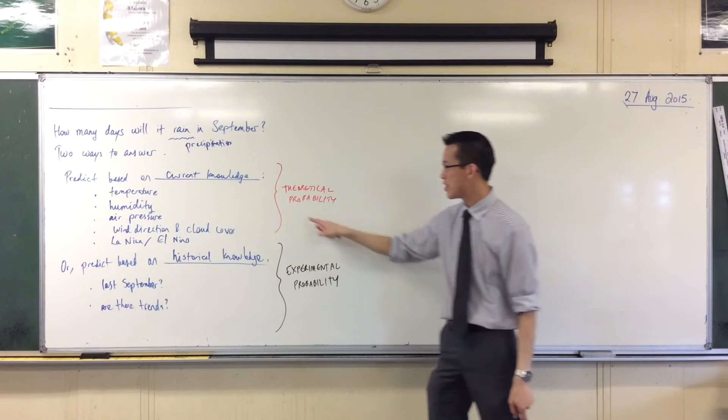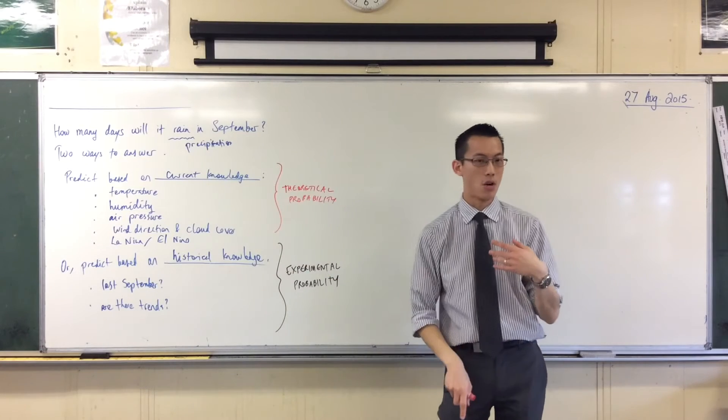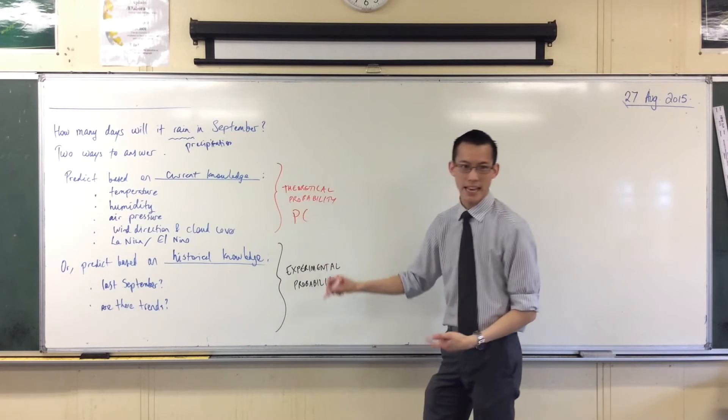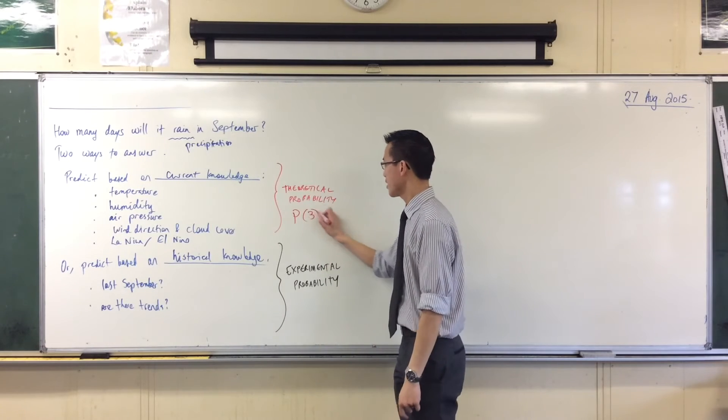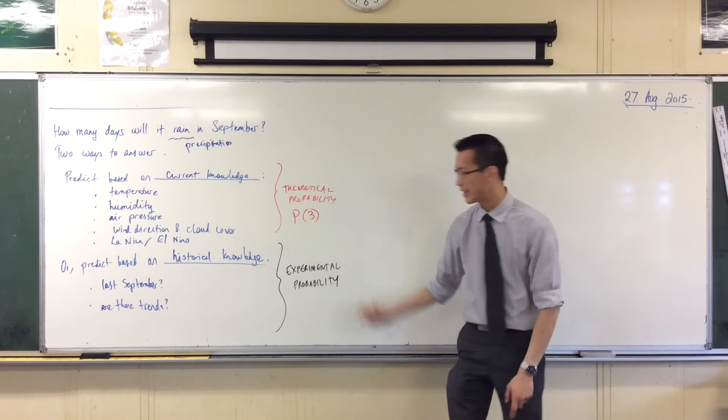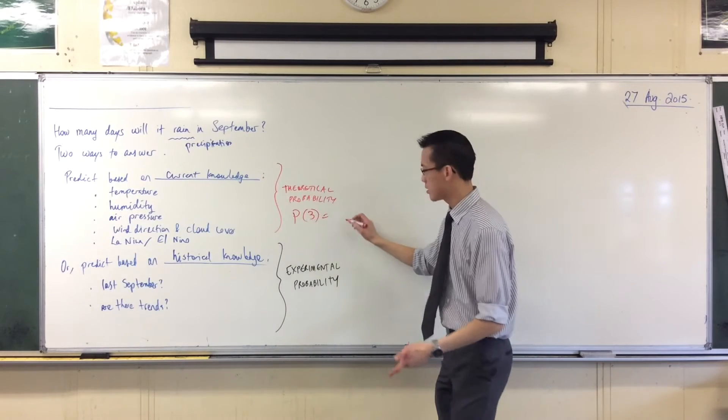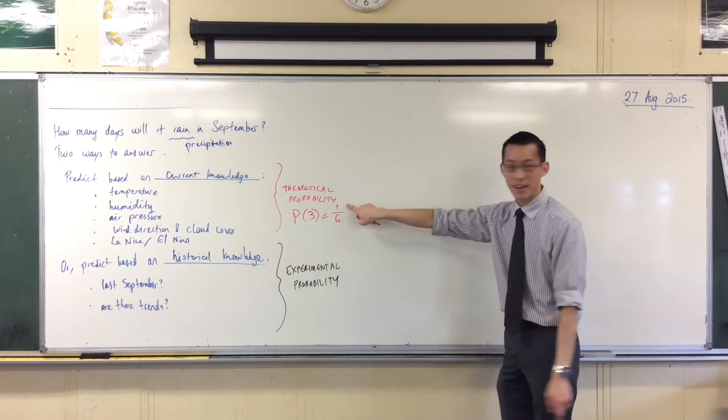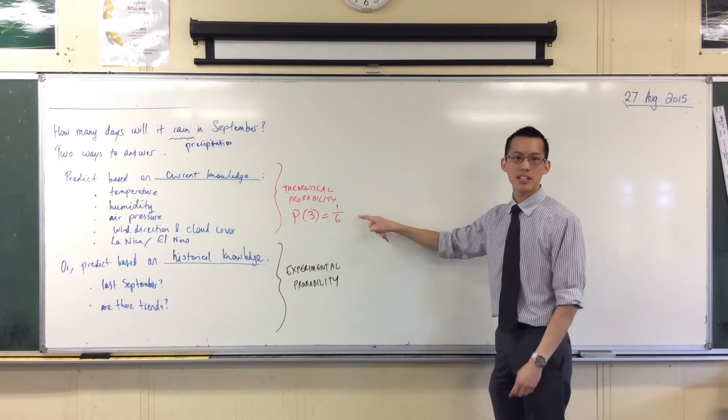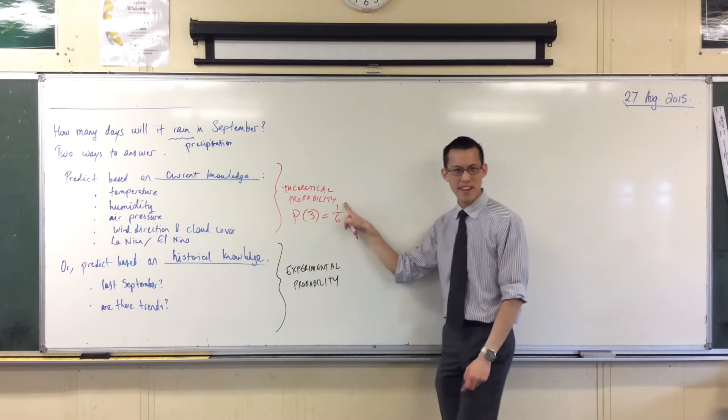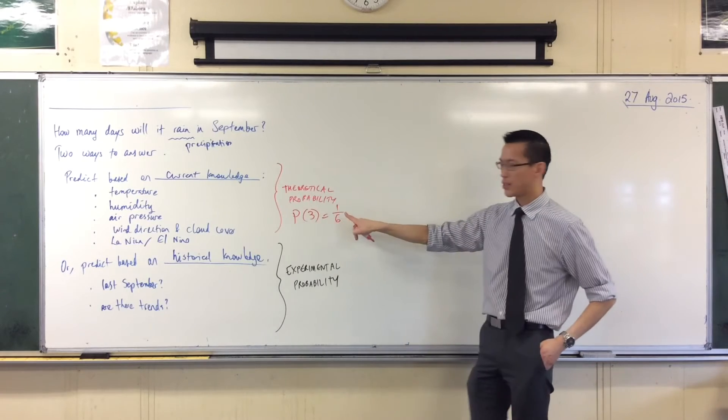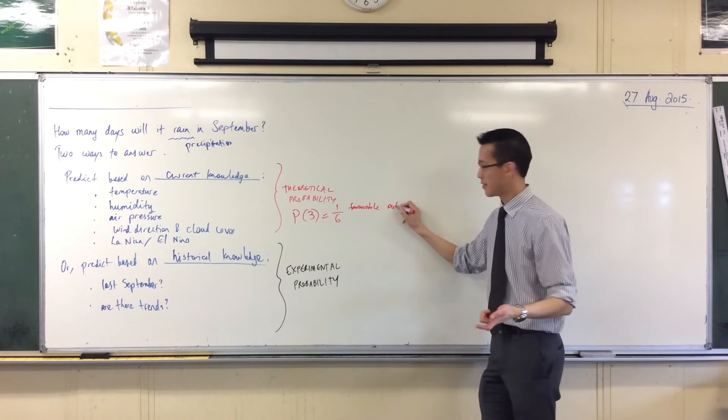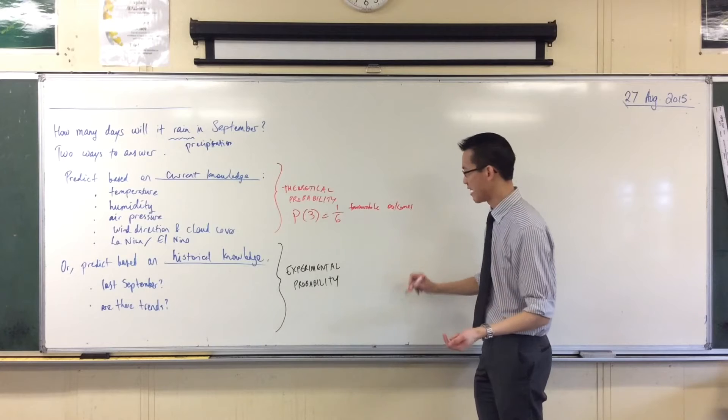Theoretical probability—if I ask you to roll a die, we know that the probability of getting, say, a three should be one out of six. One out of six, just the three because there's only one three on there and there are six possible outcomes. We call these favorable outcomes on the top and sample space on the bottom. I'm going to write that down. The title is experimental probability.